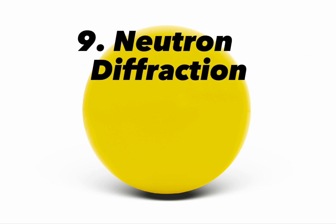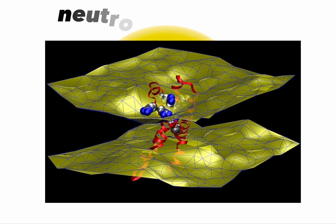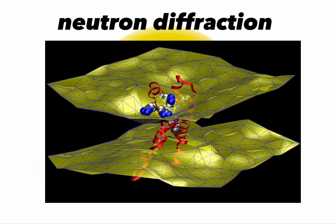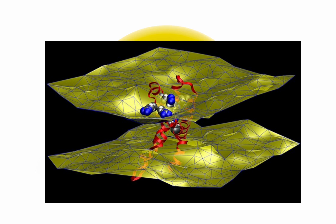9. Neutron diffraction. Neutron diffraction is a powerful technique used to study the structure of materials at the atomic and molecular level. By analyzing how neutrons are scattered when passing through a sample, scientists can determine the arrangement of atoms and gain valuable insights into the physical properties of materials.